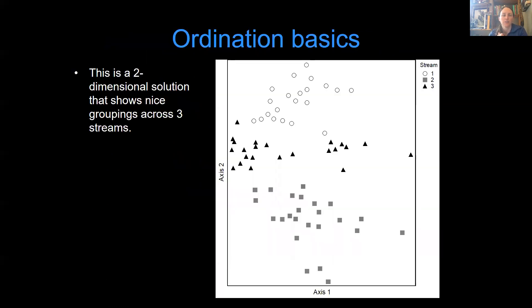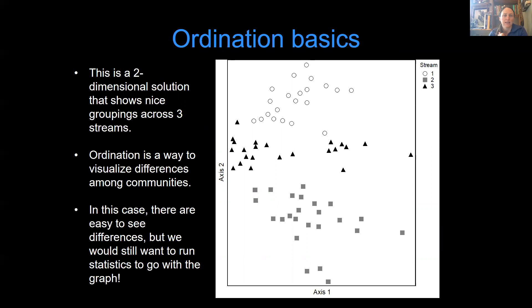So ordination basics. This is a two-dimensional solution that shows nice groupings across three different streams. Ordination is a nice way to visualize these differences among communities, and in this case, the differences are easy to see, but we would still want to run some statistics to go with the graph. So the next lecture will talk about the statistics that you might be interested in running.